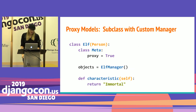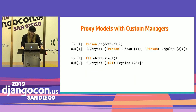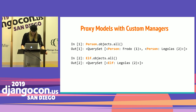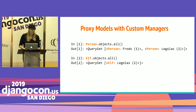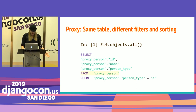One cool thing you can do with proxy models is add a custom manager. This elf has an elf manager that overrides create to set the person type to 'E' when the record is inserted. We also override the query set to filter on person type equals 'E'. So if we query person.objects.all, we get back instances of person for Frodo and Legolas. However, if we query with elf, we get back only Legolas as an elf instance, because Frodo is a Hobbit — just changing the where clause or sorting order against our one and only table.